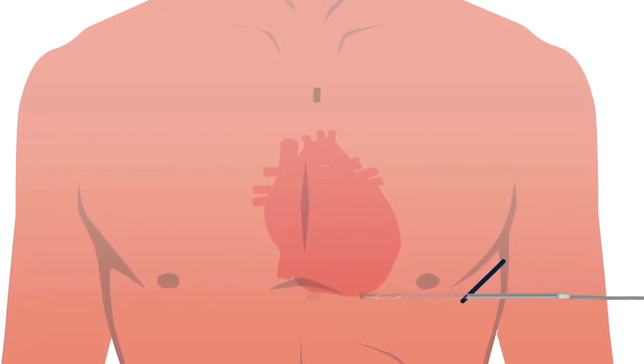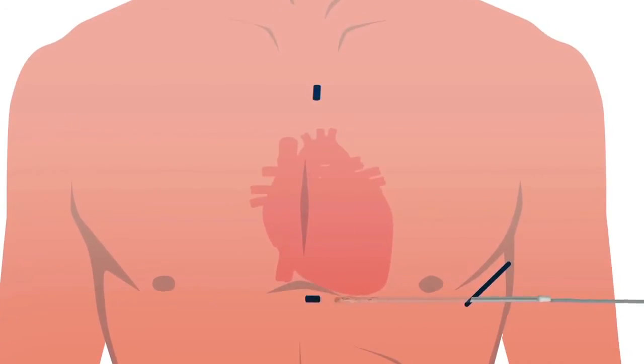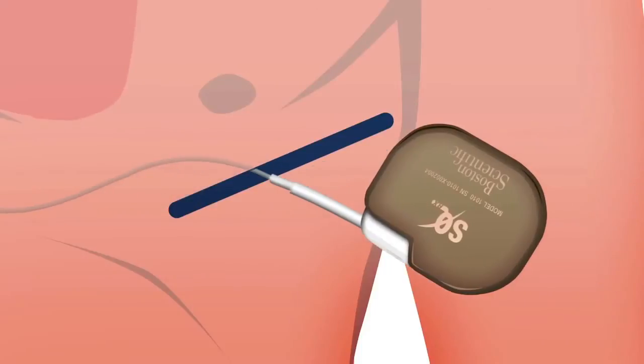Two small incisions to the left of the breastbone allow the electrode from the SICD to be placed just under the skin. The electrode is then attached to the SICD device.